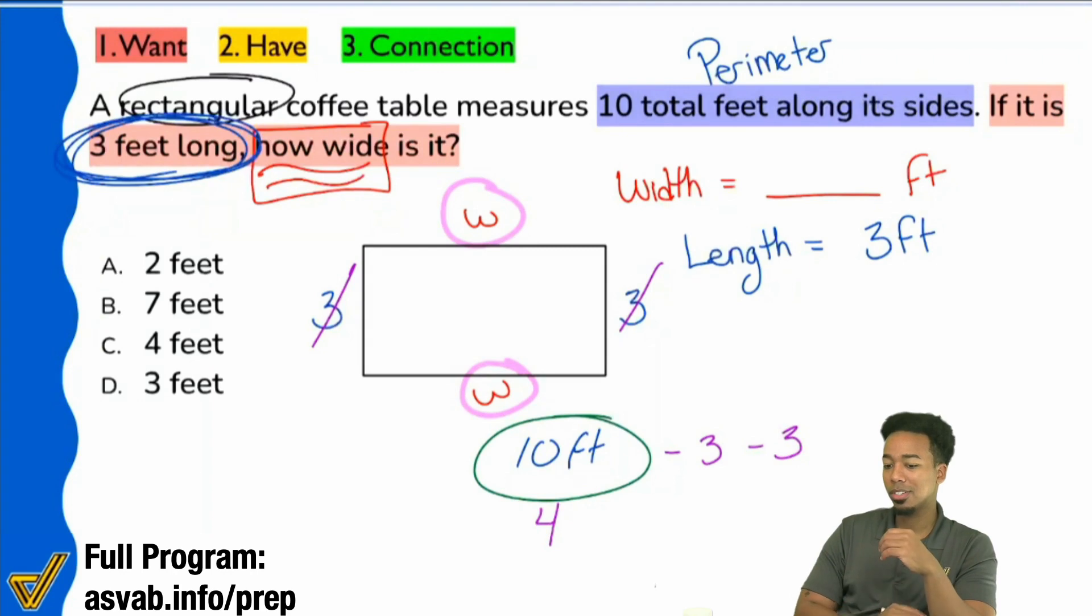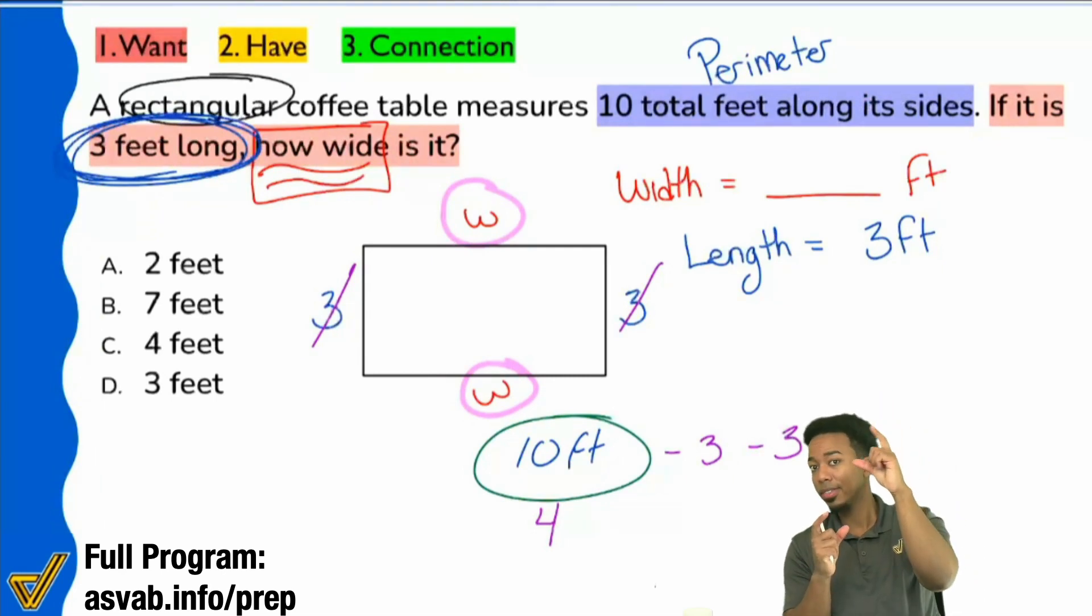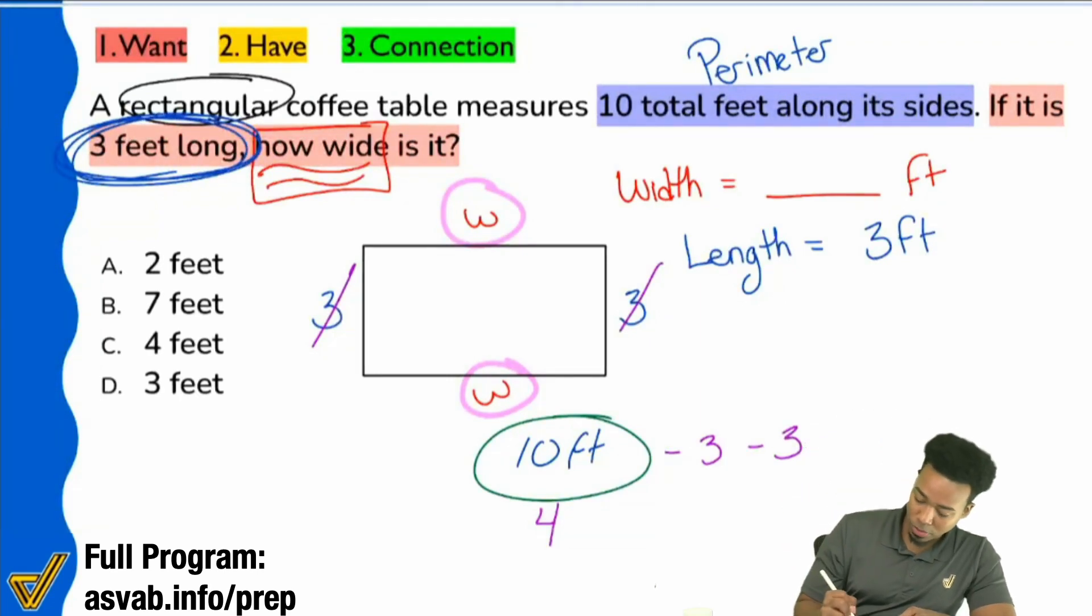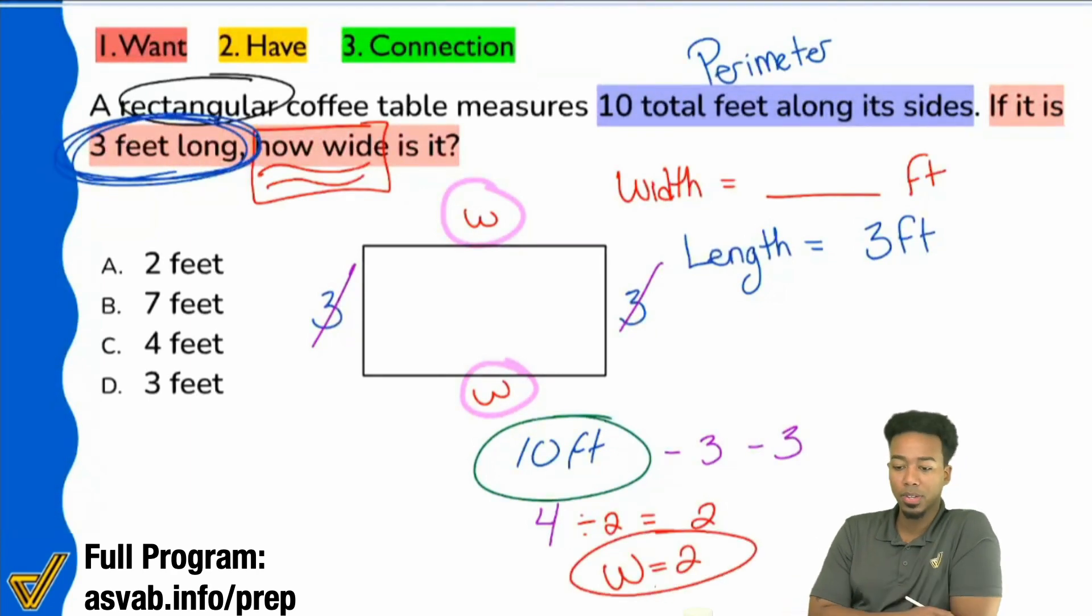So what do we need to do with that four to get our final answer? What do we need to do? Yeah, we got to cut it in half. We got to divide it by two because we have a width and a width. We have two widths that make up four. Cut that four in half and you'll see what one of those widths are. And so that's going to give you two. The width is going to be two. So that's a little bit more of an intuitive way to go through it. Kind of showing you, hey, if you can visualize it, this is kind of how you might approach the problem.